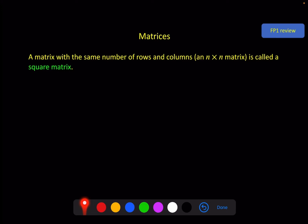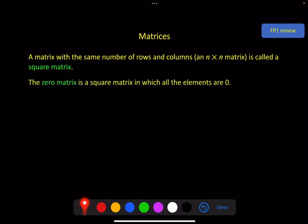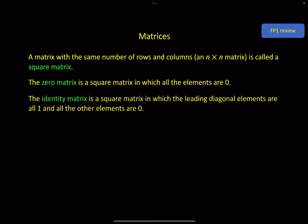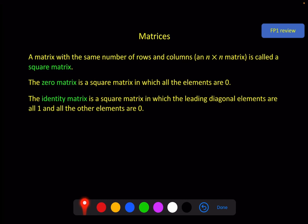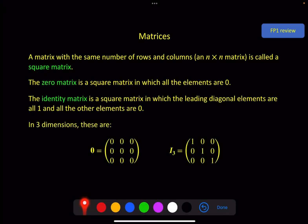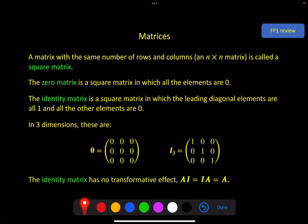A square matrix has the same number of rows as columns, written as an n by n matrix. The zero matrix is a matrix full of zeros. The identity matrix has ones on the leading diagonal and zeros everywhere else. You've probably used these in two dimensions before; in three dimensions they are shown here. A key characteristic of the identity matrix is that it has no effect when you multiply a matrix by it. So A times I equals I times A, and both equal A.